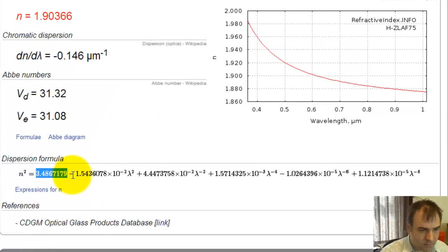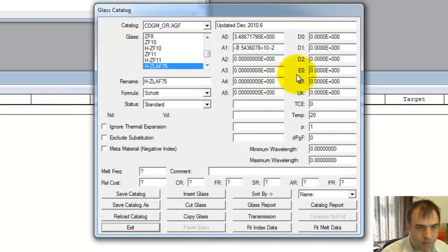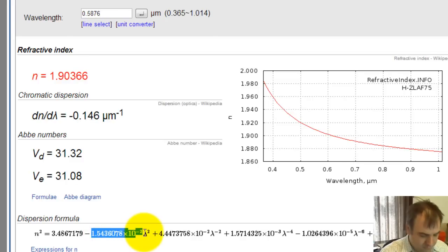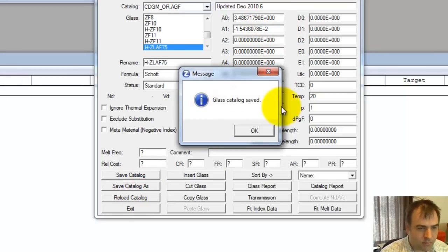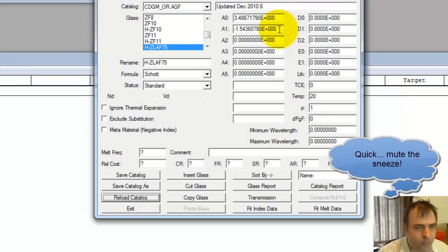Here's the coefficients, A0 through A5, and I think I can just copy and paste. Let's try that. Save the catalog and reload. It's coming up. Let's get the second term. There's a negative sign, I've got to account for that. I'm going to do E to the minus 2. I'm going to hit save again and reload. Something did not work right.